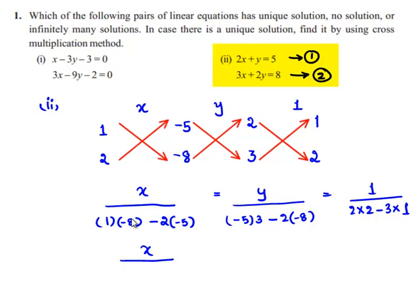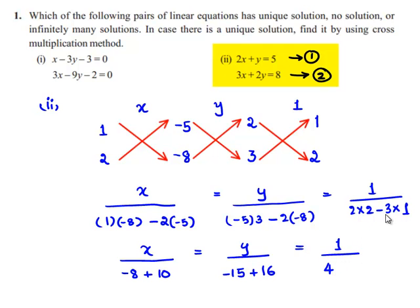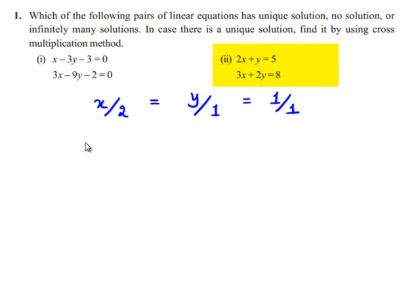This gives x by 1 multiplied by minus 8 is minus 8, minus of minus is plus, and 2 multiplied by 5 is 10. This is equal to y by minus 5 times 3 is minus 15, minus of minus is plus, and 2 times 8 is 16. So we get x divided by minus 8 plus 10 is 2, is equal to y by 1, is equal to 1 by 1. We can write x by 2 is equal to 1 and y by 1 is y is equal to 1.